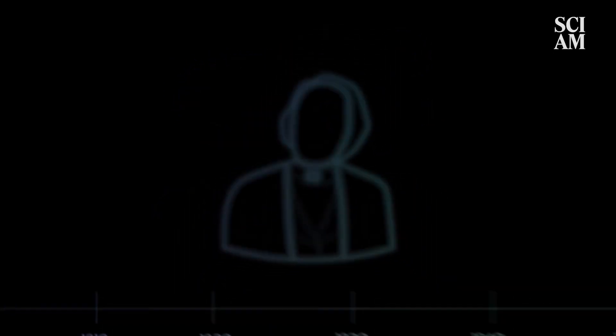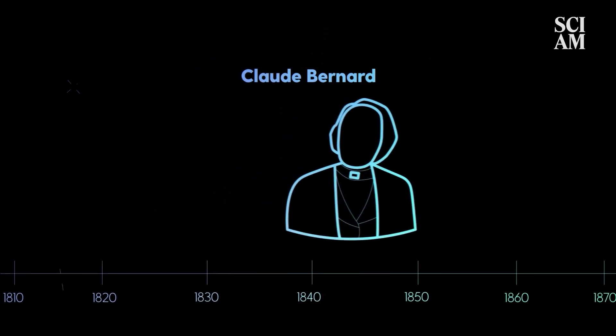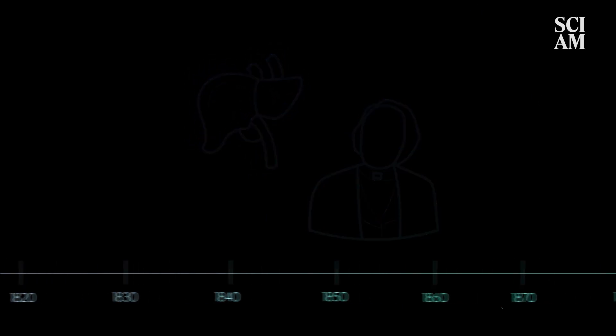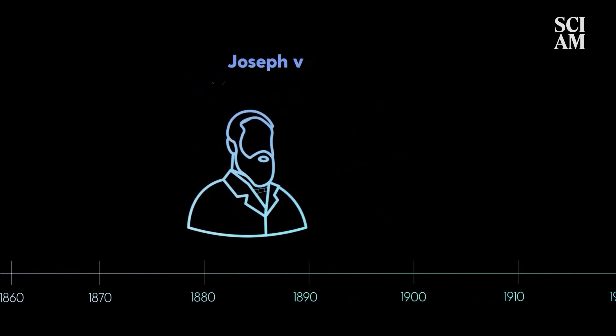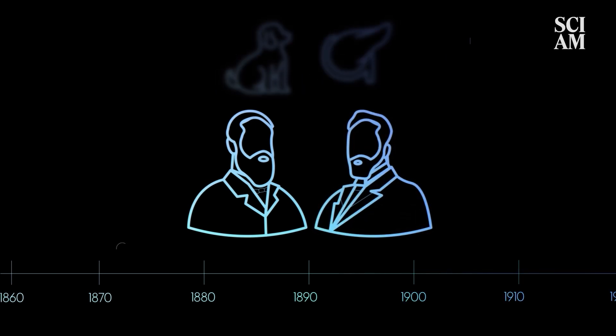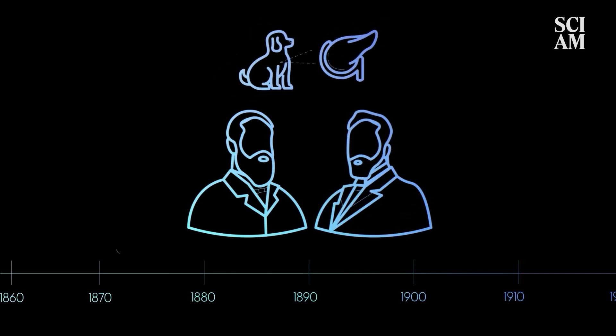In the 19th century, Claude Bernard uncovered the importance of the liver in regulating blood sugar levels. Several decades later, Joseph von Mering and Oscar Mankowski discovered that removing the pancreas from a dog led to the development of diabetes.